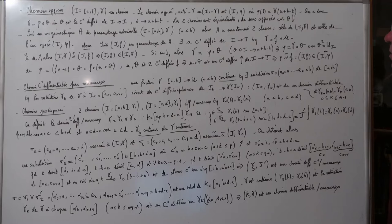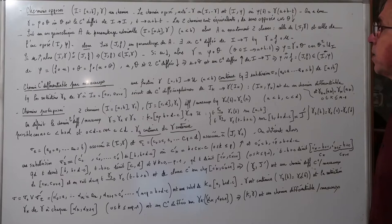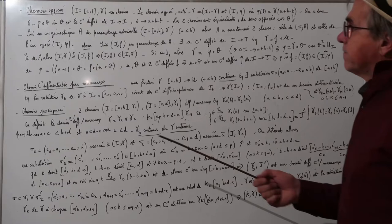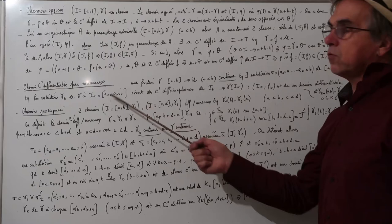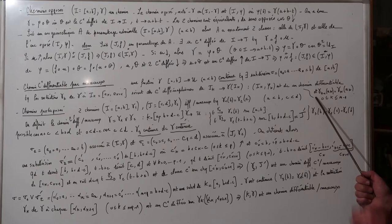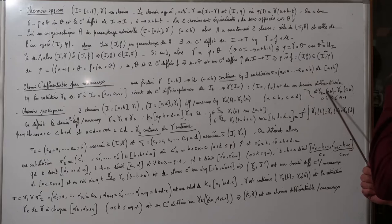Chemin C1-différentiable par morceaux : une fonction f de [A,B] vers U, continue, telle qu'il existe une subdivision de [A,B] telle que les restrictions γₖ à chaque segment de la subdivision, pour k compris entre 0 et N-1, soient des C1-difféomorphismes de Iₖ dans γ(Iₖ). Ce qui assure la continuité : γₖ₋₁(aₖ) = γₖ(aₖ) pour tout k compris entre 0 et N-1.